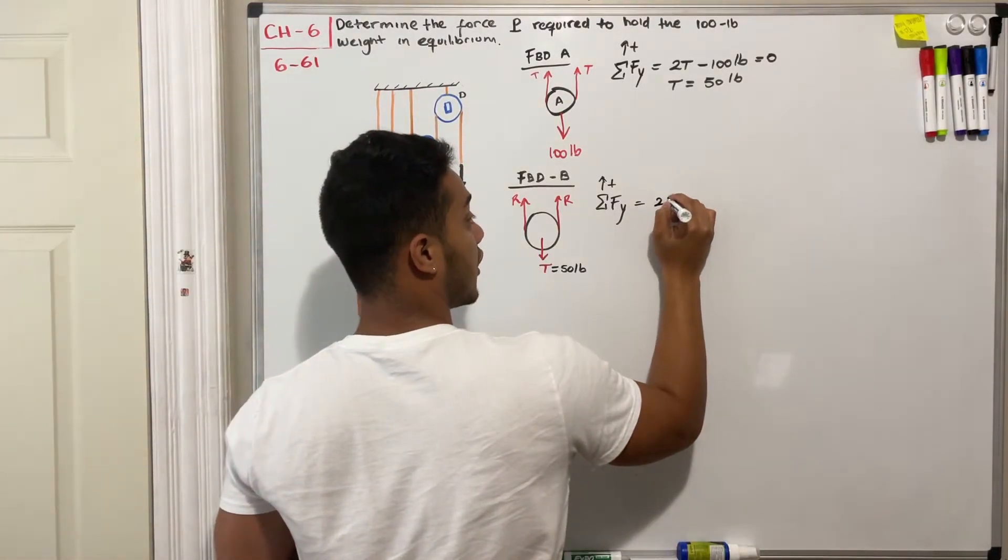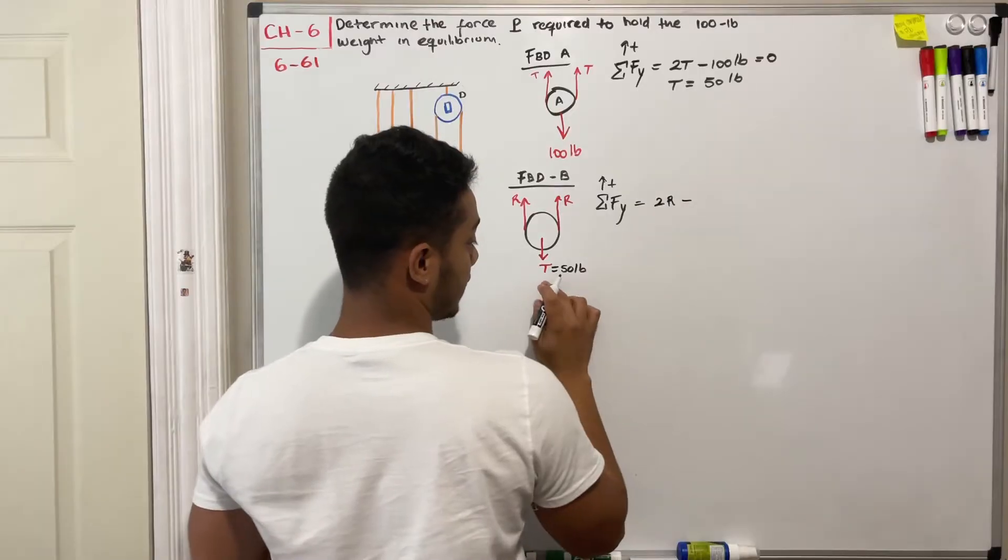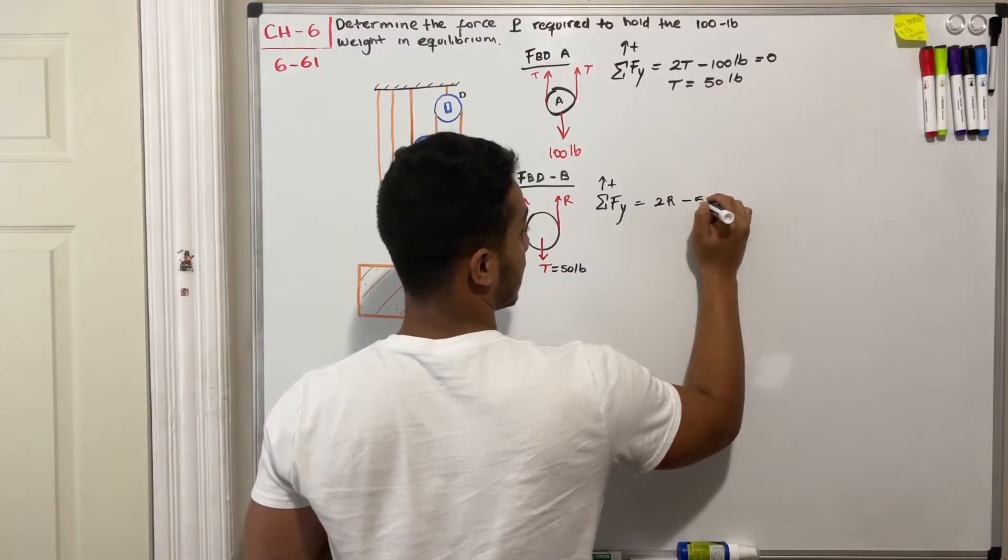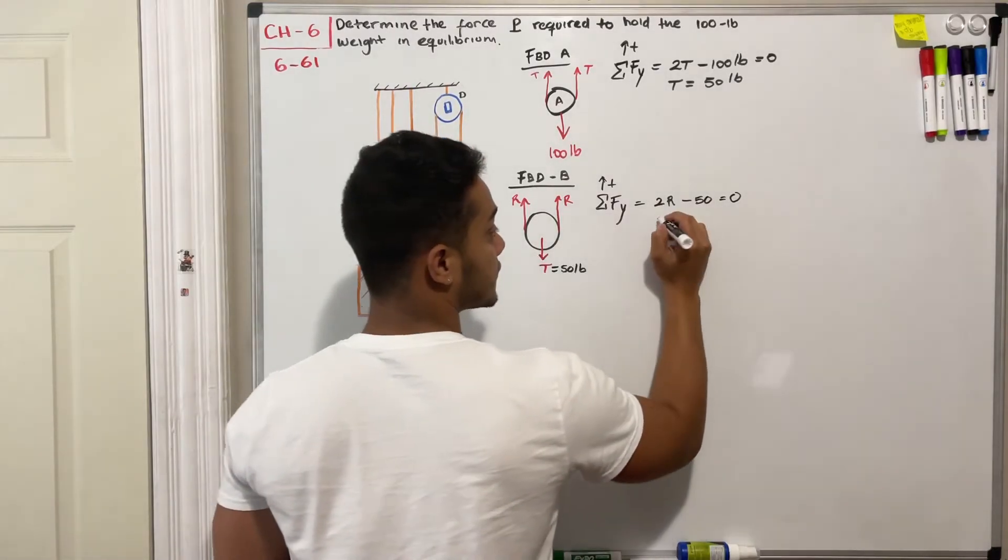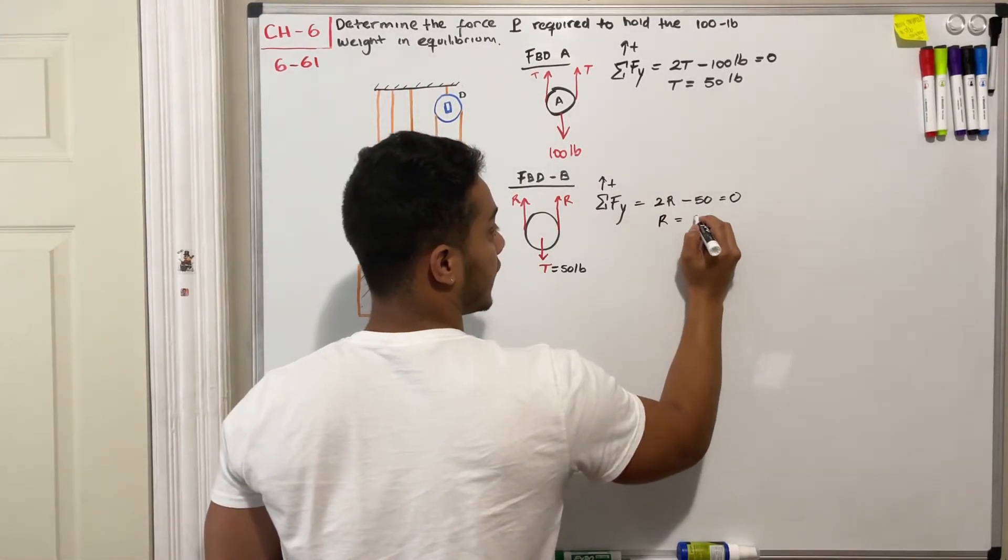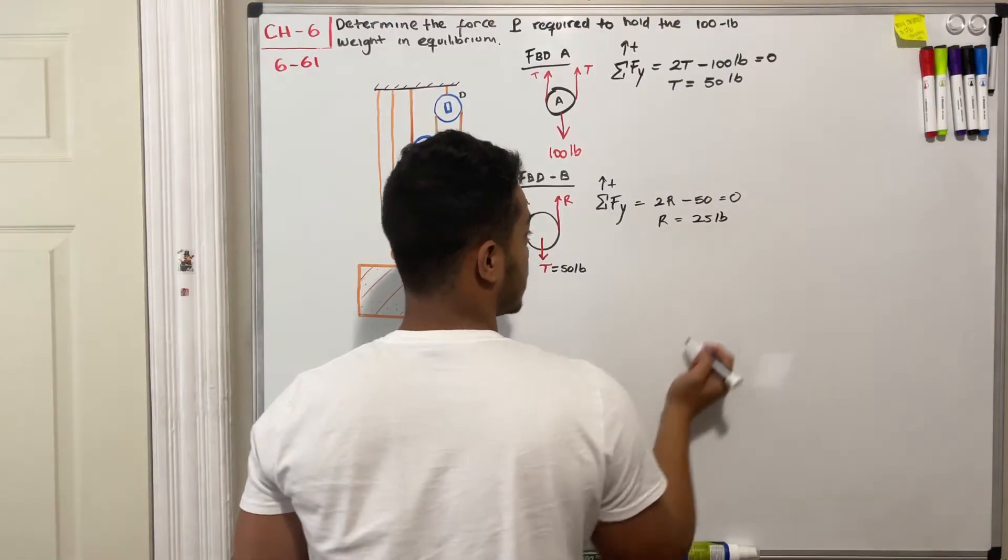Well we got two Rs going up and then we got negative 50 going down, and all this should be equal to zero. If we solve for R again we will find out that this is equal to 25 pounds.